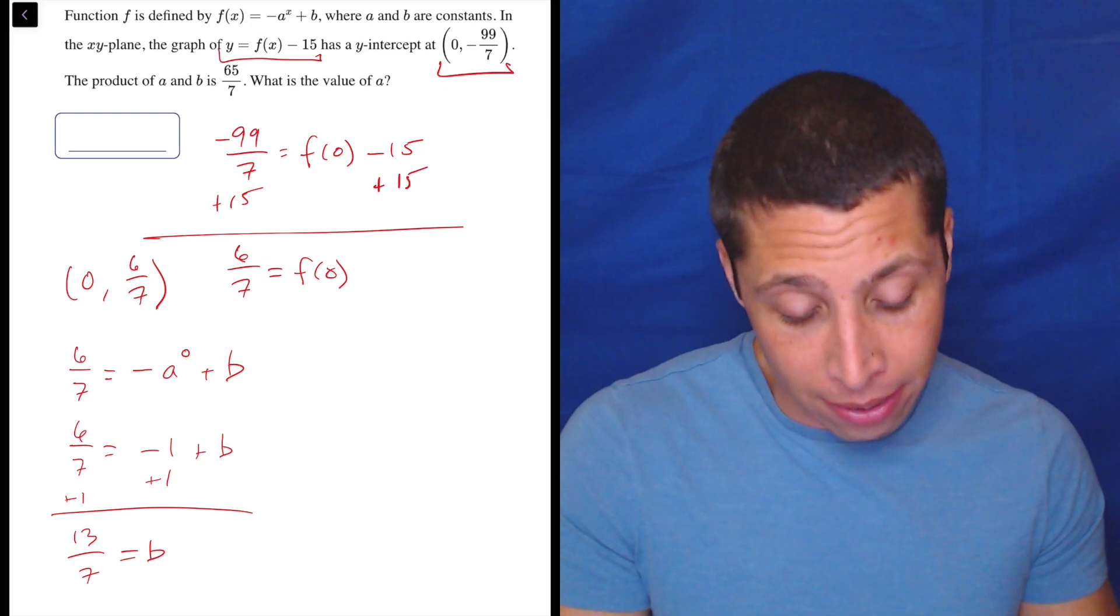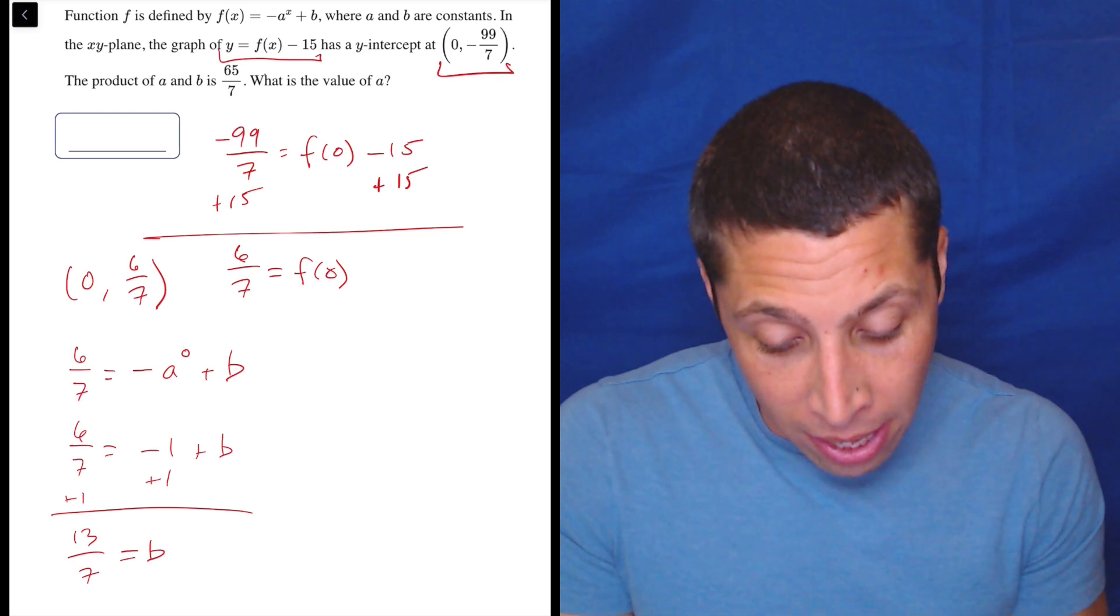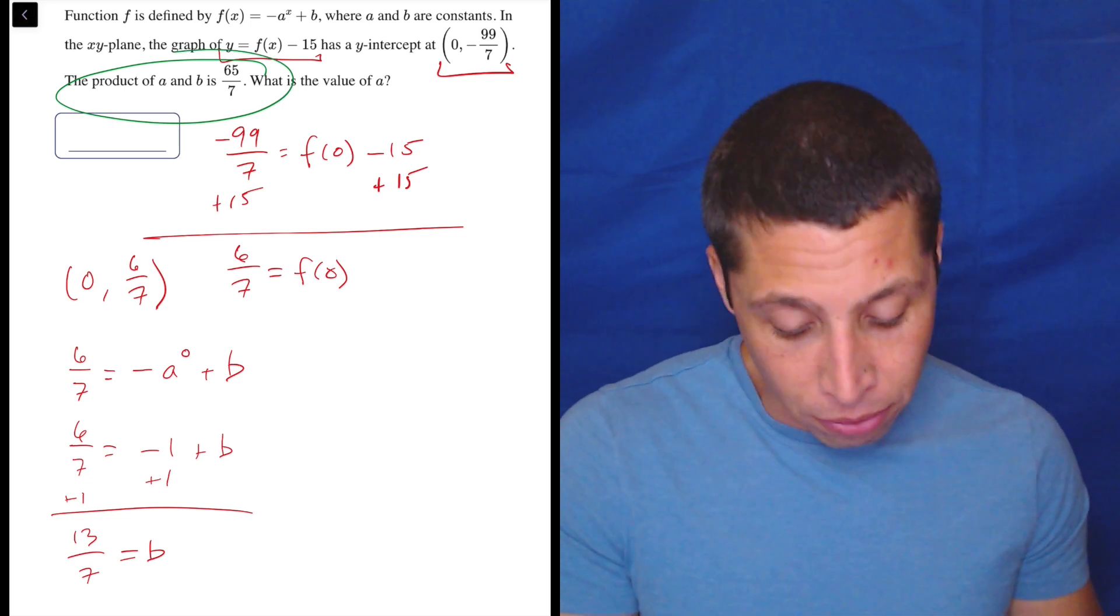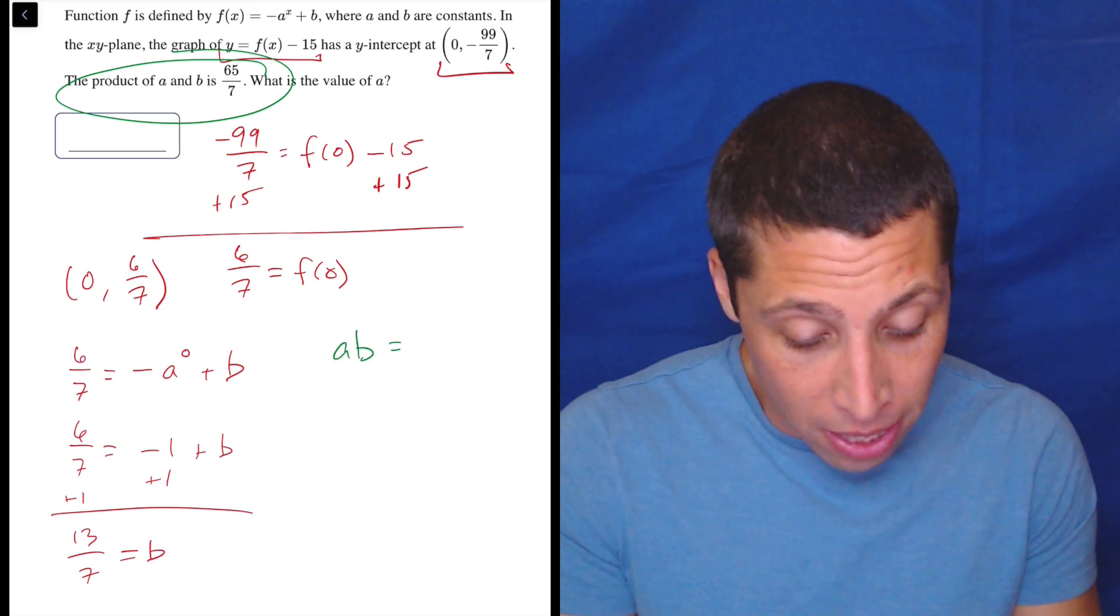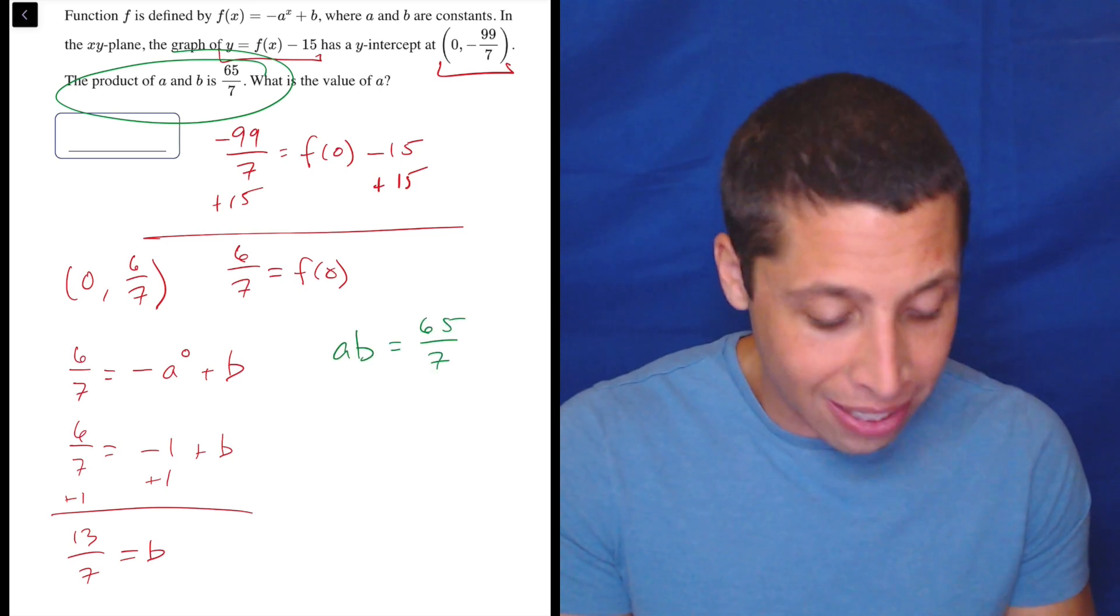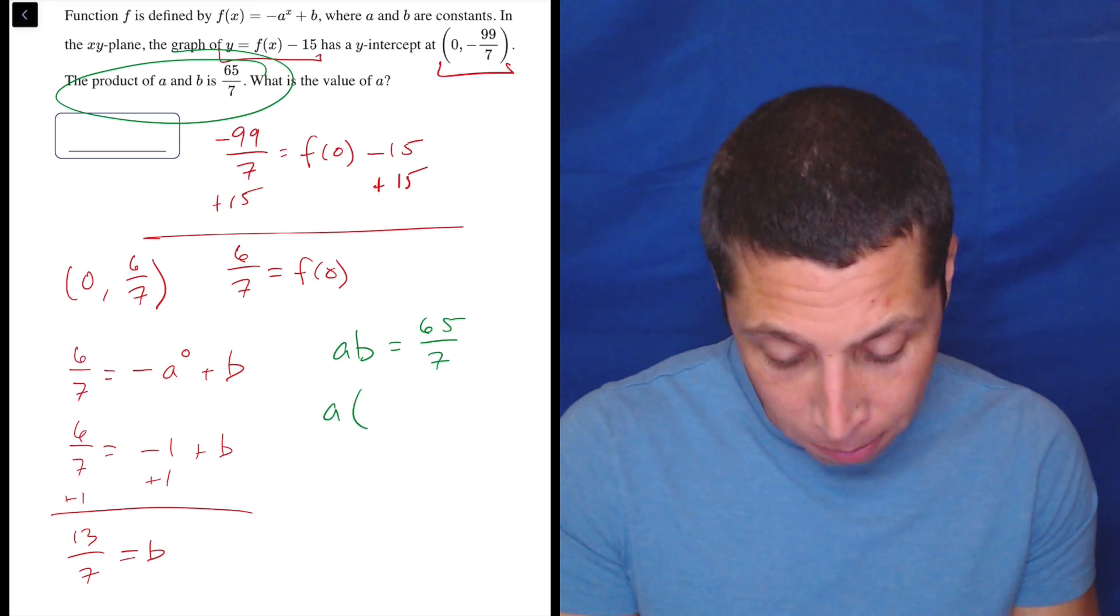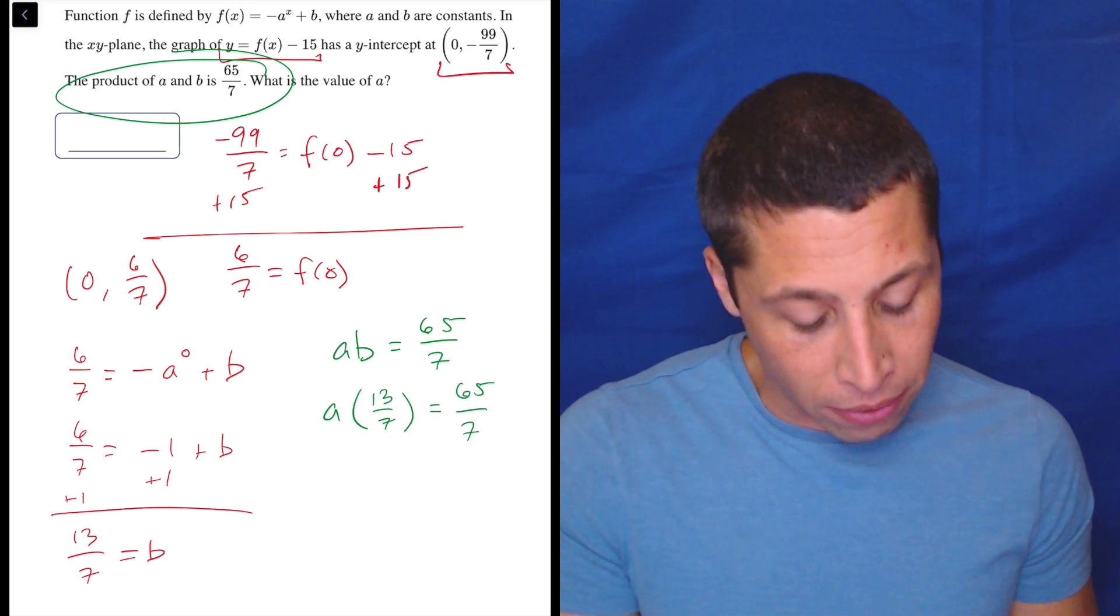Now I can hopefully realize that I've got another equation here that A and B have a product, meaning multiply, of 6/7. So let's deal with that. So that means A times B is 65 over 7. And so A times 13 over 7 is equal to 65 over 7.